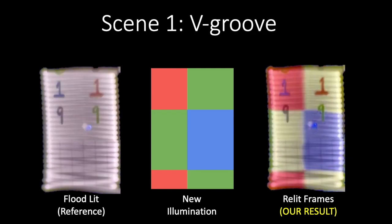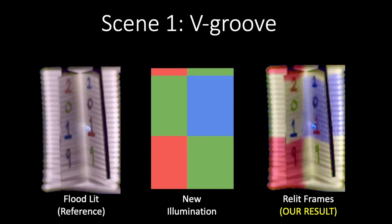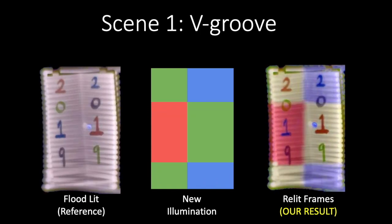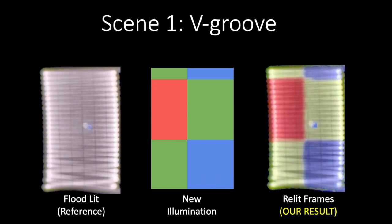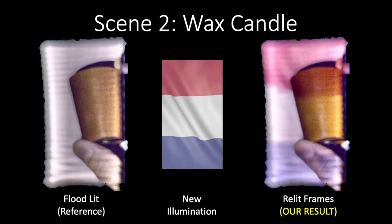We now show results of our setup, beginning with relighting of dynamic scenes. We reiterate that in all of our results, the floodlit scene shown as a reference is also a result of our method. Here we show a v-groove being relit with a moving color checker pattern. Note that when the v-groove closes, there are brightening and color bleeding effects due to global illumination. Now we show a wax candle being relit with a color flag.